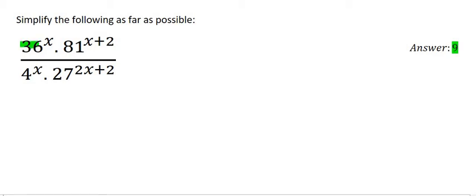If we look at this question, we can't put the 36, the 81, the 4, or the 27 together because there are exponents involved. So what can we possibly do because we can't do anything at the moment?